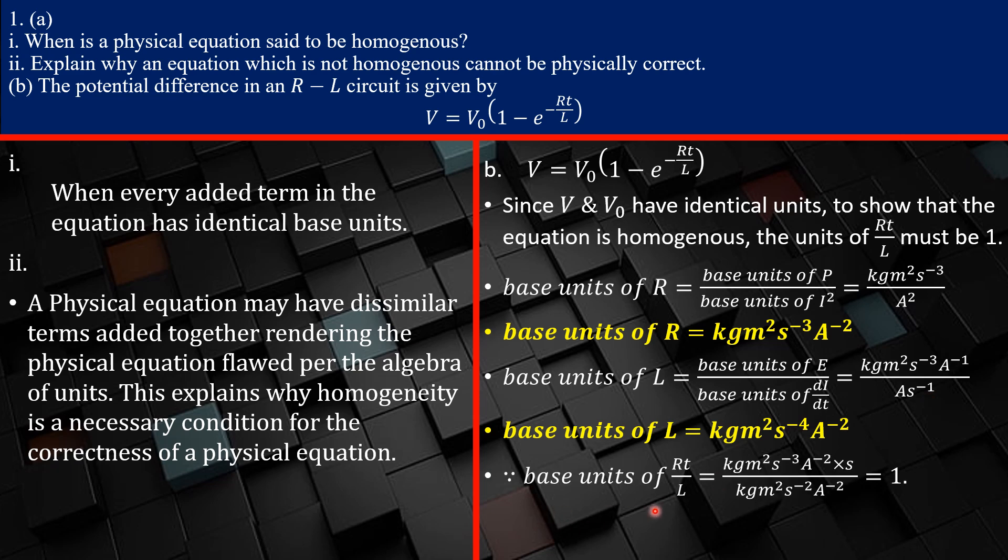So our base unit of L is all of that. Now, if we want to look for the base unit of R times t over L, then you realize that I'll simply take a base unit of this guy, multiply that with the second divided by the base unit of this guy, which gives me one. And so you notice that our equation is therefore homogeneous. And that is the proof, guys. That is it.